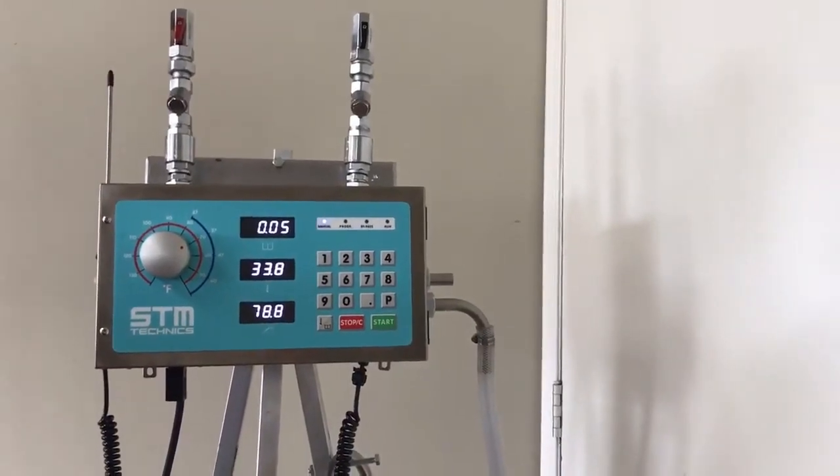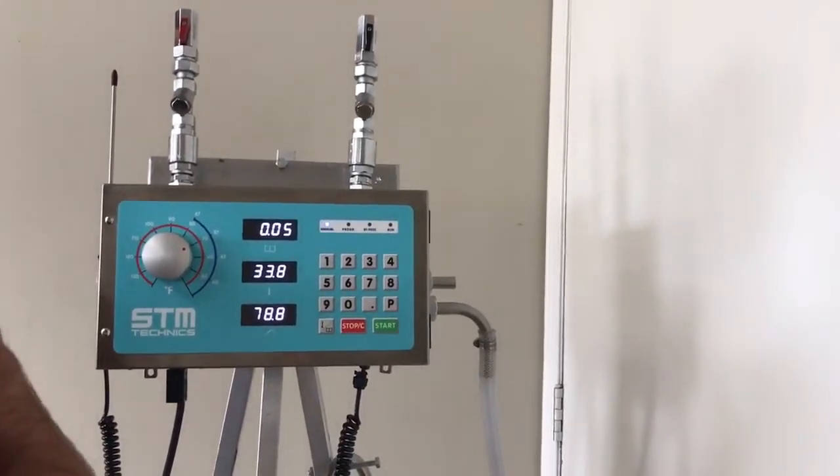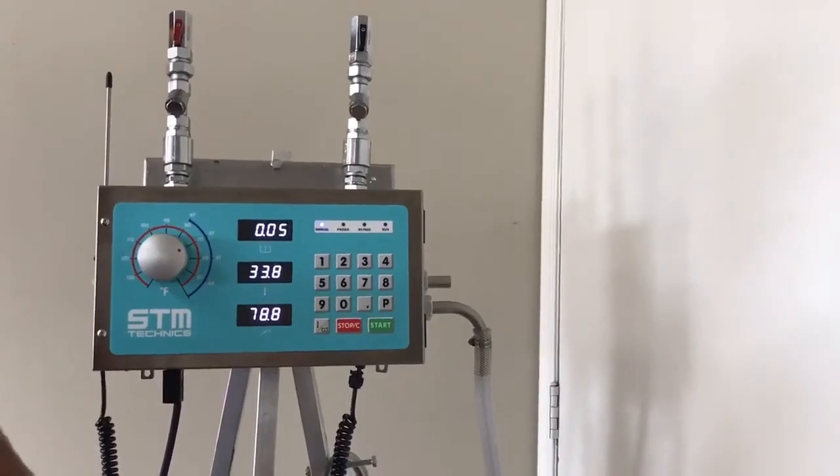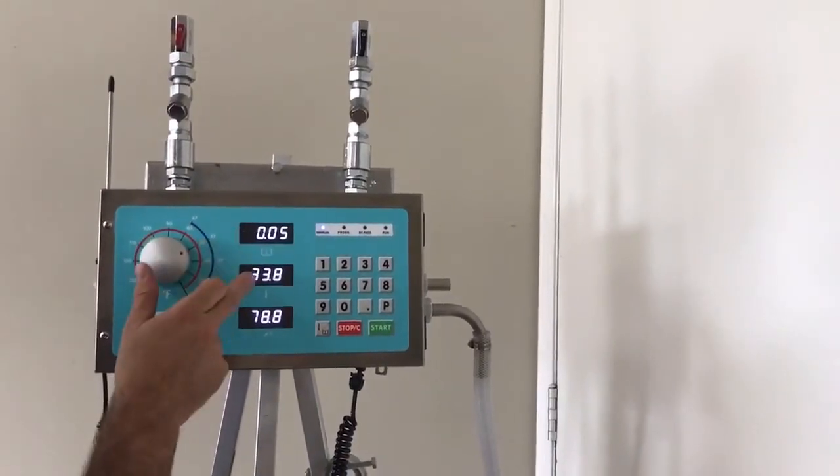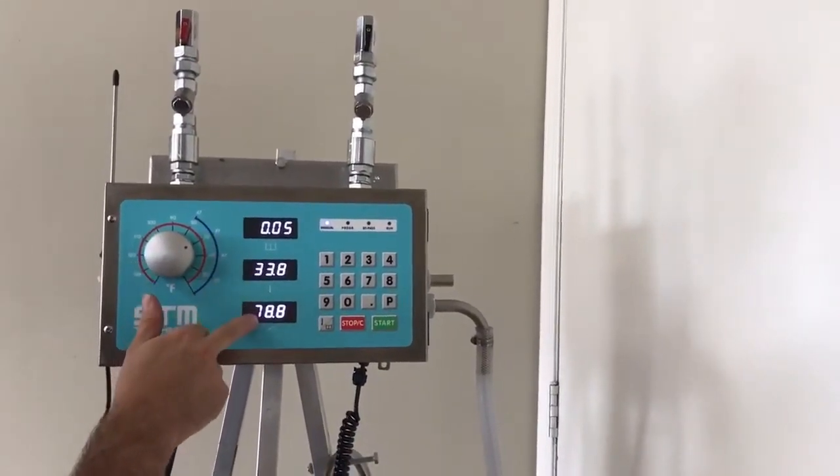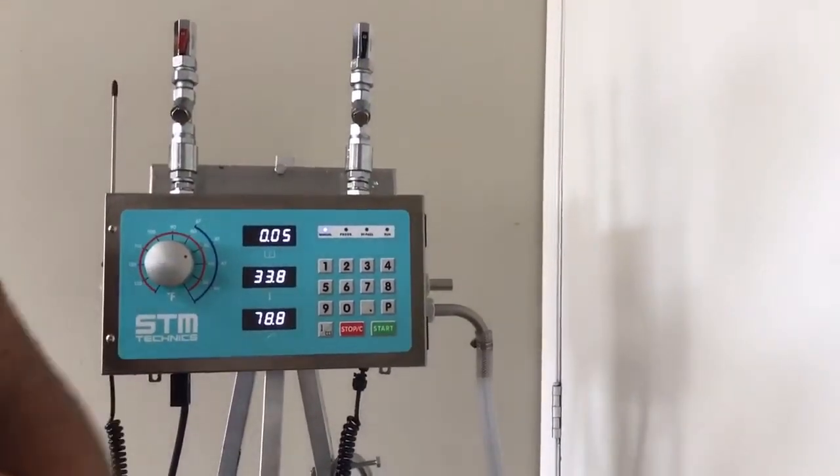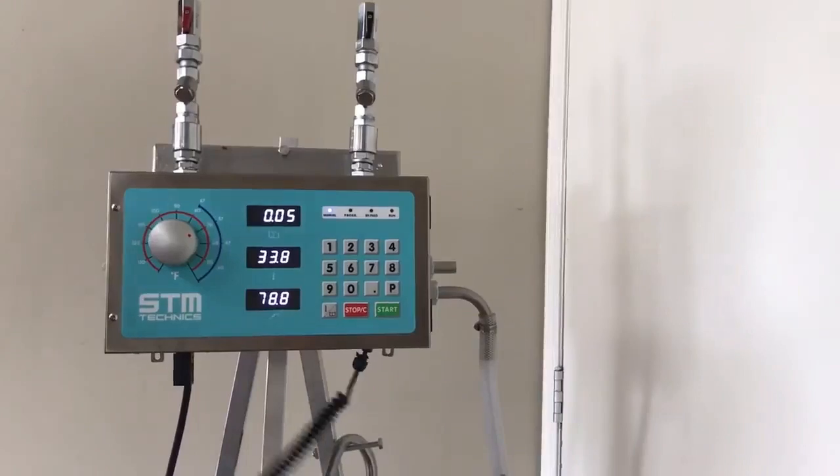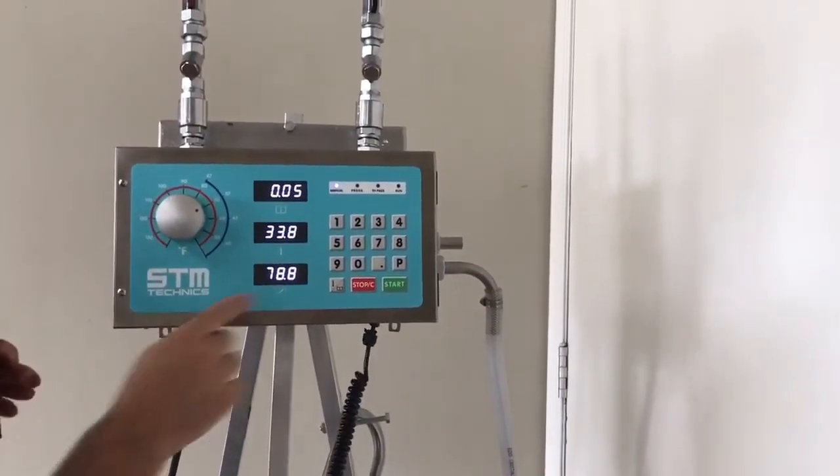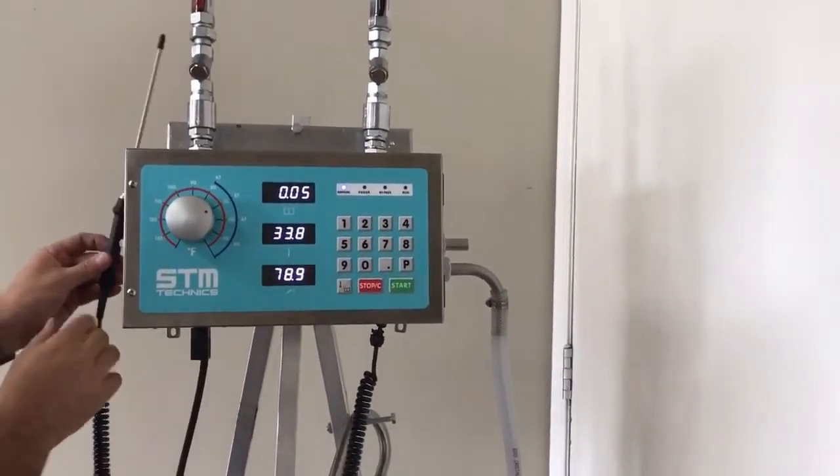Now we're going to start with our manual training. This is our home screen. We have three windows here. The first is our quantity. The second is our temperature. And the third is our temperature for the probe. The probe is detachable. You can put it in your dough mix or whatever mix you have, and it will give you a reading of your product.